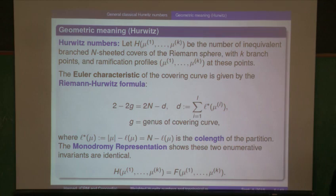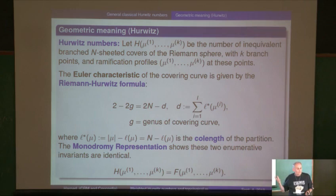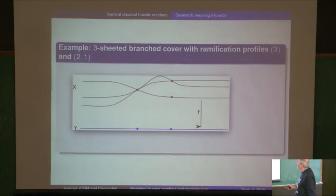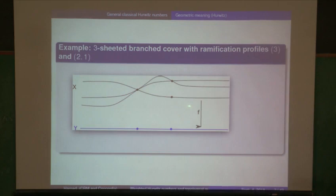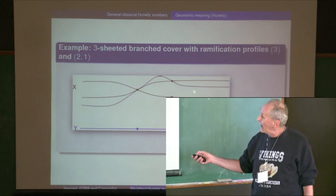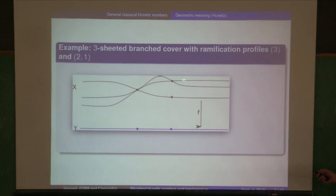This enumeration divided by the order of the automorphism group of the branched cover gives you the same number. The connection is by monodromy: you take a branched cover, take a little stroll with your bicycle on the base curve that lifts upstairs, and it gives you a product of symmetric group representations that permute the different ramification points over each branch point.